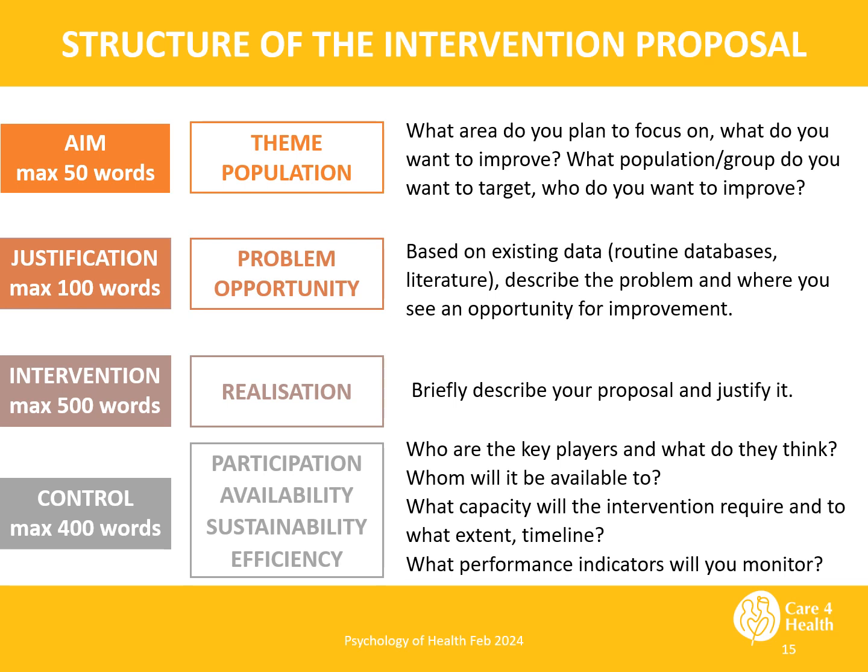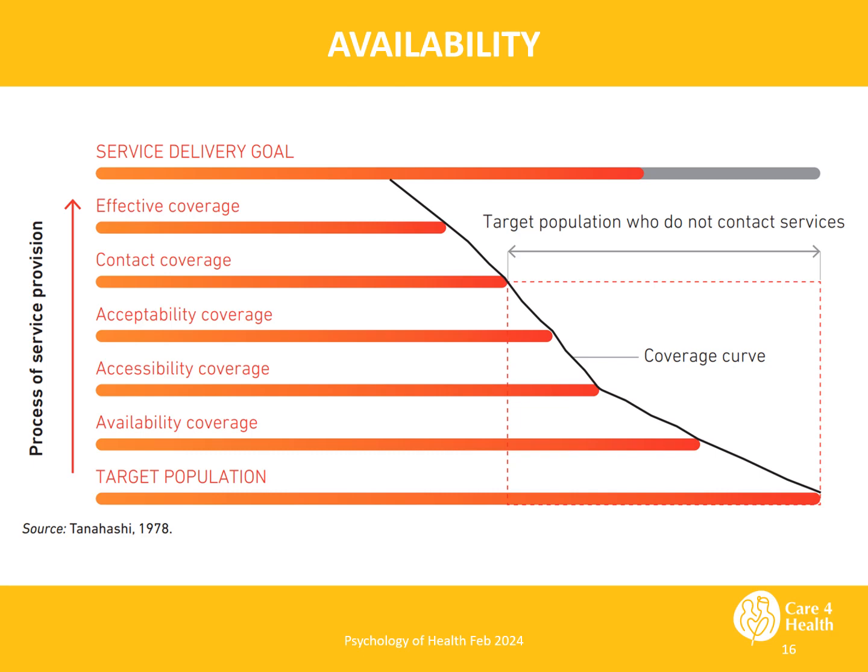When evaluating participation, identify who you need to consult with and involve in the preparation and implementation of the project, so that your proposal will meet the needs, will be available, acceptable, and beneficial to those who need it most. Also consider whose support is required for successful implementation. When evaluating accessibility, we highly recommend starting from the Tanashi graph and analyzing to whom the intervention will or will not be offered, available, or acceptable, and how this availability will be monitored.